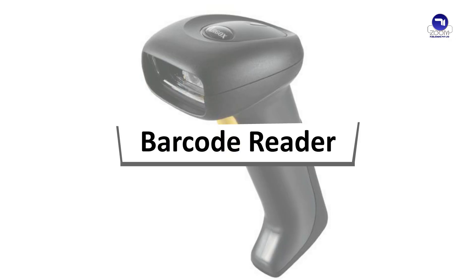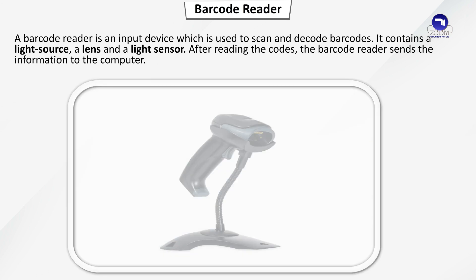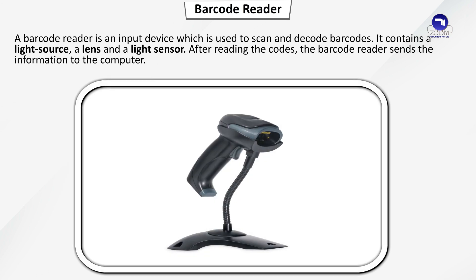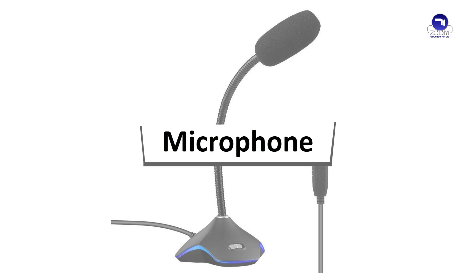A barcode reader is an input device which is used to scan and decode barcodes. It contains a light source, a lens and a light sensor. After reading the codes, the barcode reader sends the information to the computer.